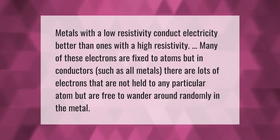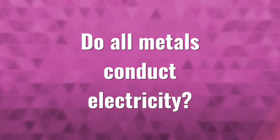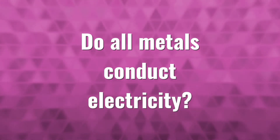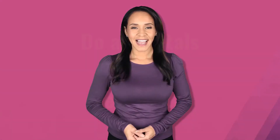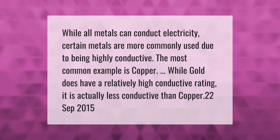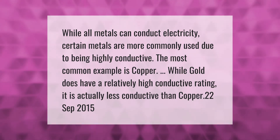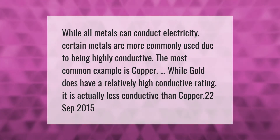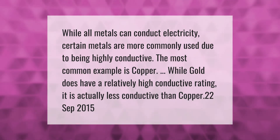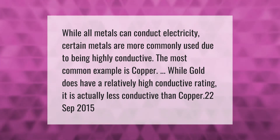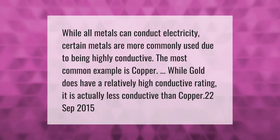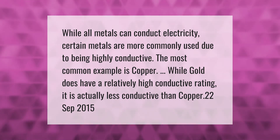These electrons are free to wander around randomly in the metal. While all metals can conduct electricity, certain metals are more commonly used due to being highly conductive. The most common example is copper. While gold does have a relatively high conductive rating, it is actually less conductive than copper.